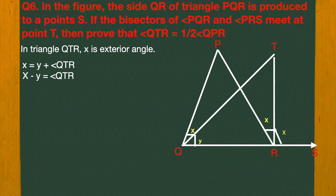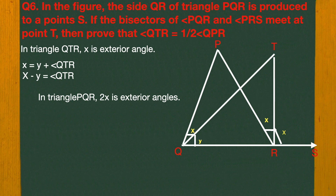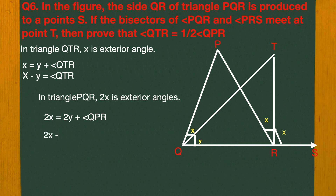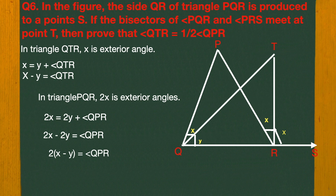In triangle PQR, 2X is an exterior angle, so 2X equals 2Y plus angle QPR. Rearranging: 2X minus 2Y equals angle QPR. Taking 2 as common: 2 times (X minus Y) equals QPR. Dividing both sides by 2: X minus Y equals QPR divided by 2. Since X minus Y equals angle QTR, we get QTR equals QPR over 2.